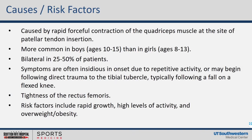Osgood-Schlatter is more common in boys than in girls, with about a two-year age shift over girls. It can be bilateral in about 25% to 50% of patients. Symptoms are usually gradual onset due to repetitive activity without a specific injury, though sometimes patients present after falling on a flexed knee that aggravated the pain. We'll often notice tightness in the quads or rectus femoris. Parents often note a recent rapid period of growth. These are typically highly active youth athletes, and sometimes overweight or obesity may be associated.